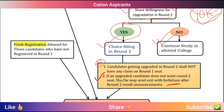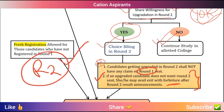If an upgraded candidate doesn't want the Round 2 seat, he or she may avail exit with forfeiture after the Round 2 result announcement. When in Round 2 you don't want admission to the college, you exit the whole counseling process. If you have paid the admission fee in Round 1, you can forfeit it. You cannot request a refund outside this process.